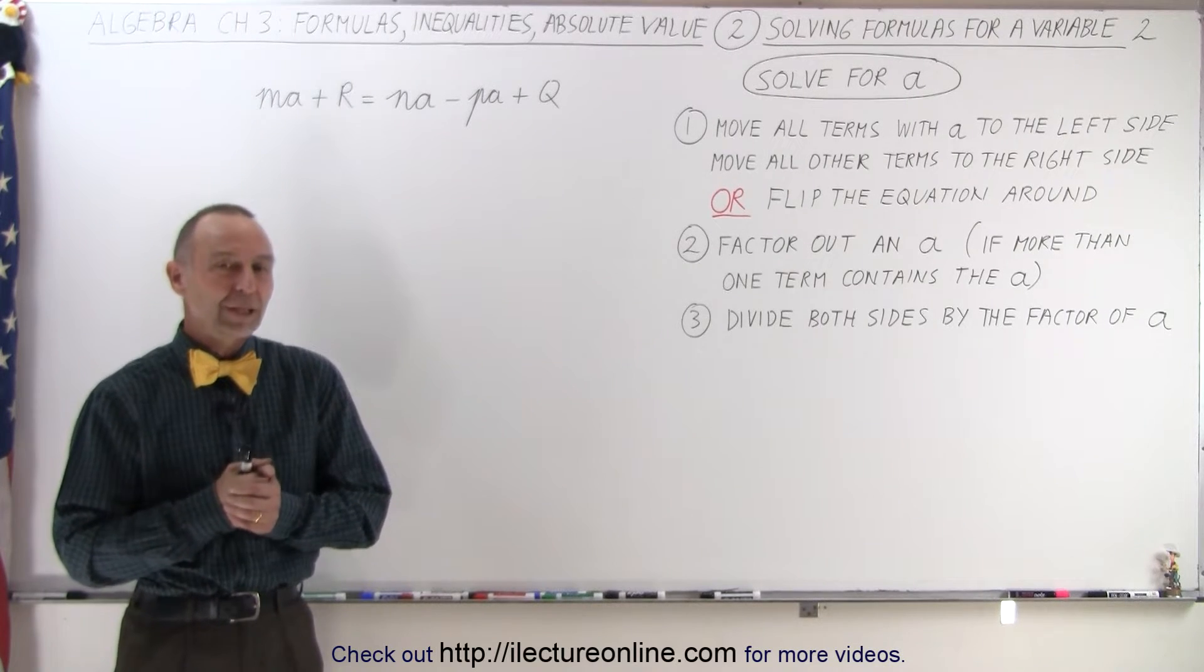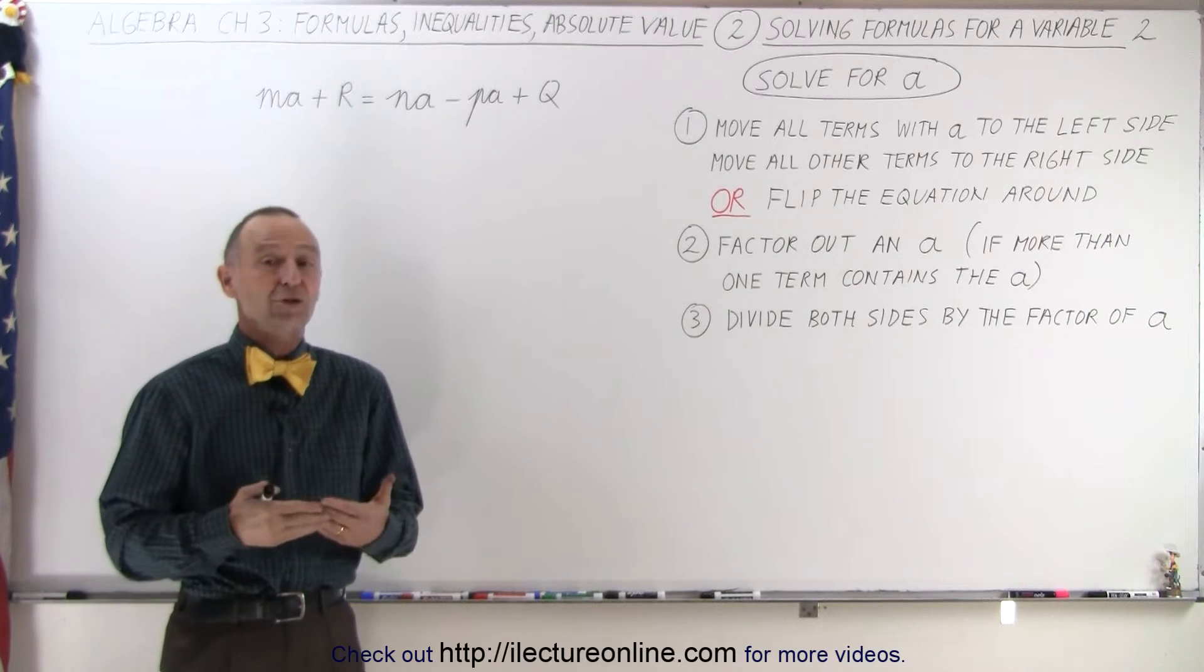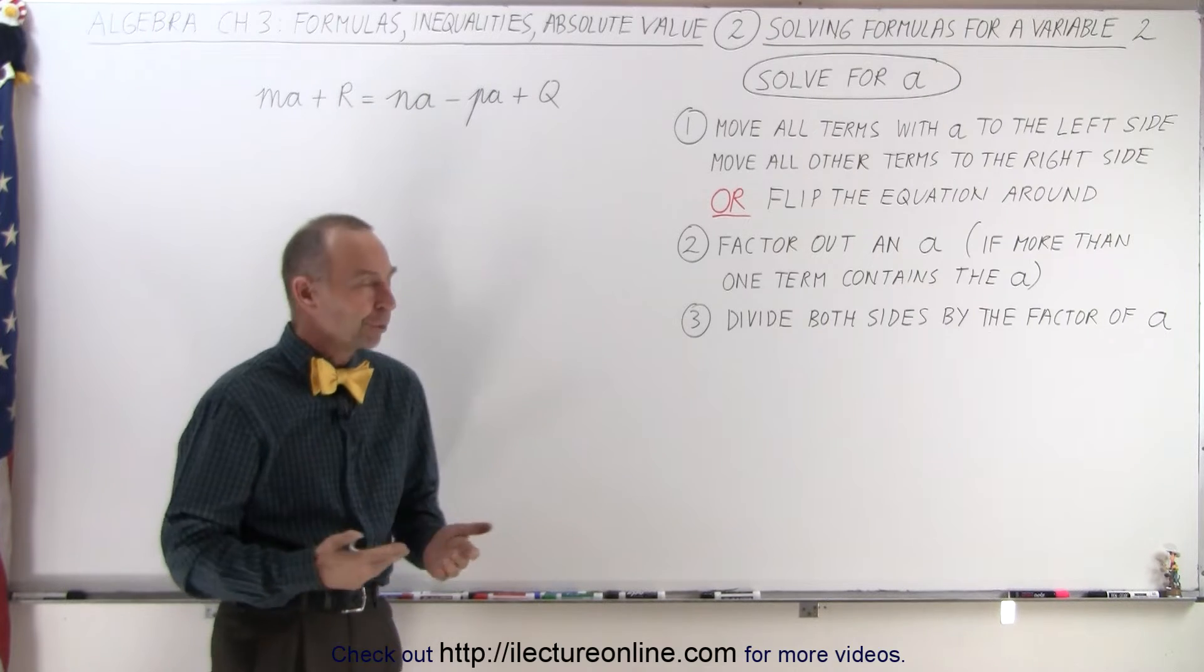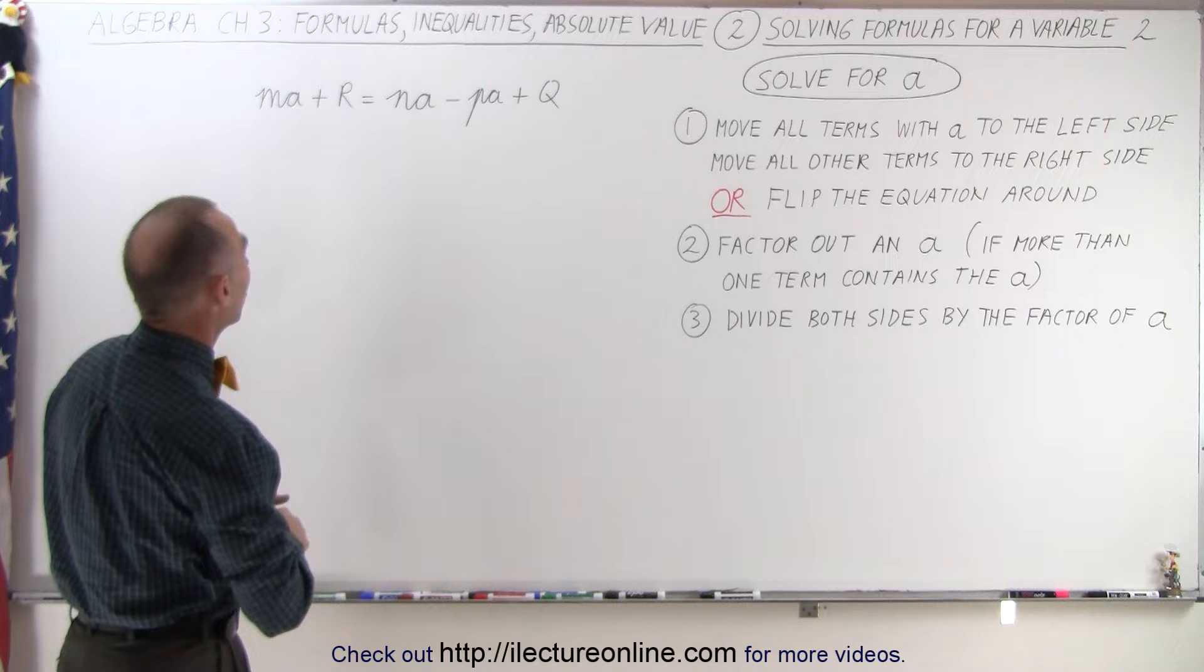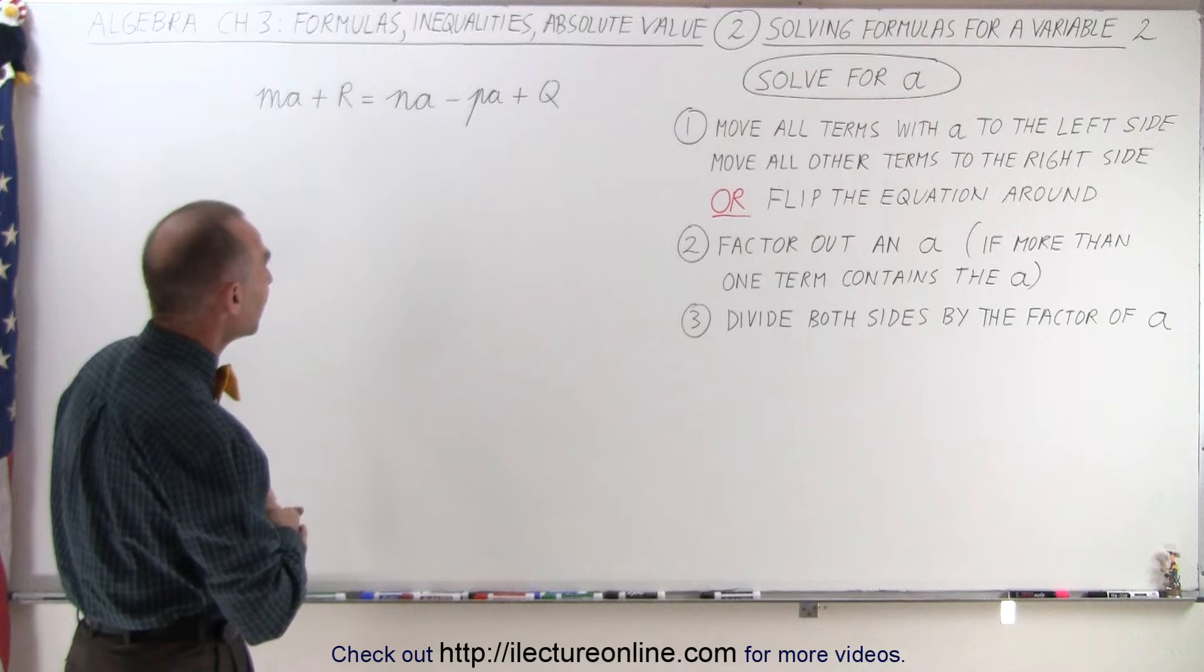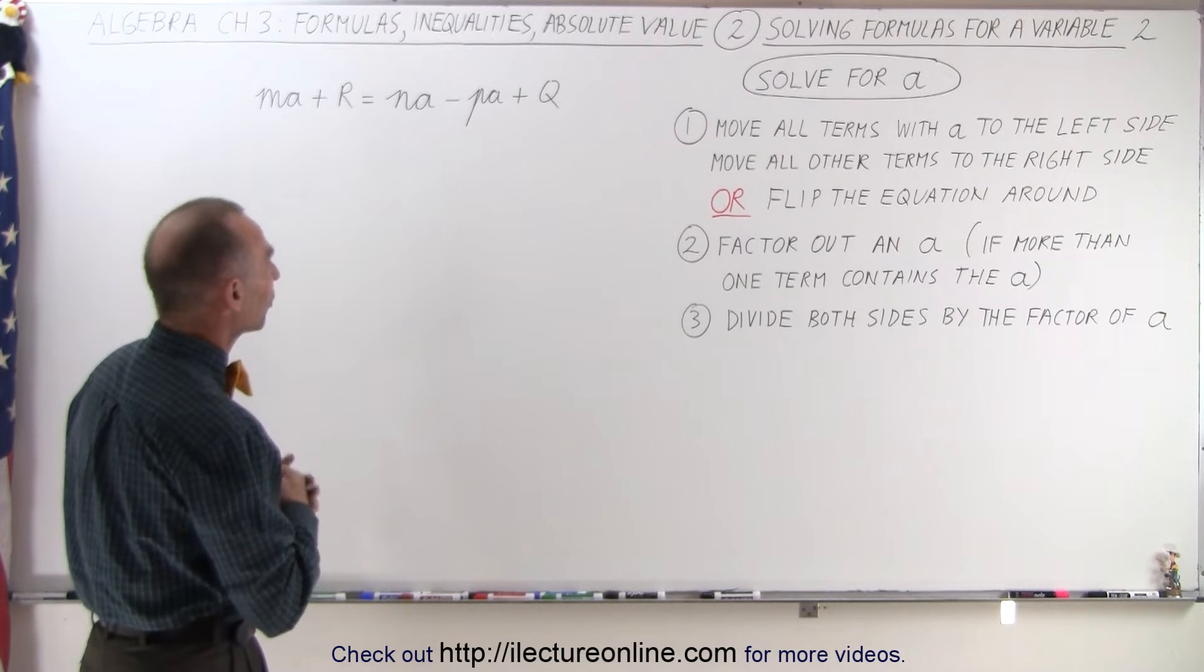Welcome to our lecture online. Here's our second example of how to solve for a variable in a formula. The example is as follows: M times A plus R equals N times A minus P times A plus Q.